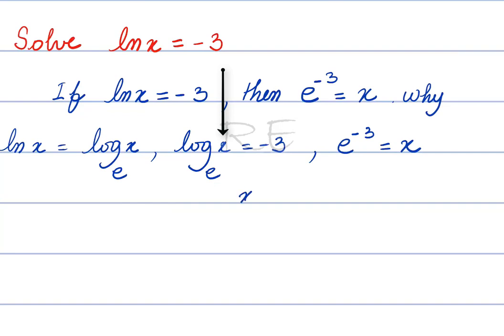Now, x is equal to one over e to the third, by the meaning of a negative exponent, which is approximately 0.0497 using the calculator.